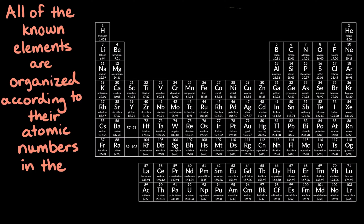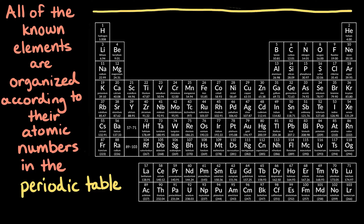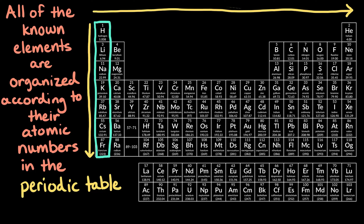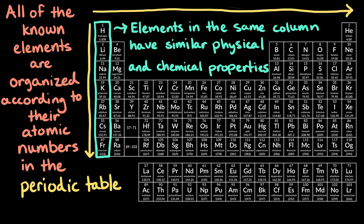All of the known elements are organized according to their atomic numbers in the periodic table. The periodic table lists the elements in order of increasing atomic number as you go from left to right, and from top to bottom. The elements are further organized into columns based on their properties. Elements in the same column tend to have similar physical and chemical properties.